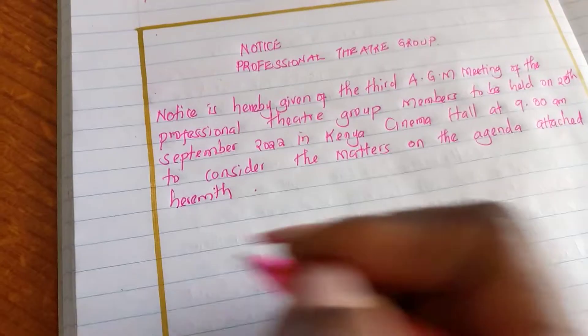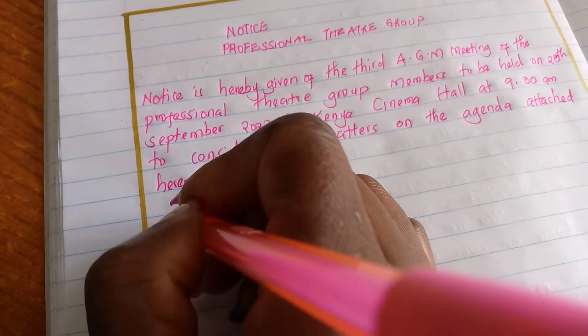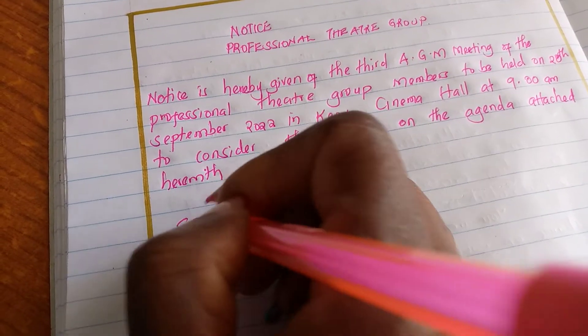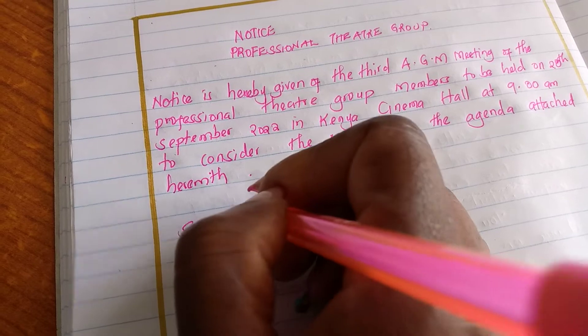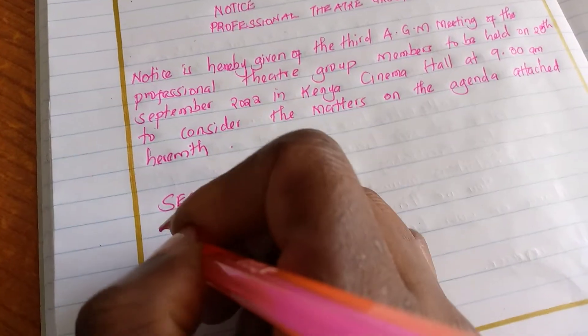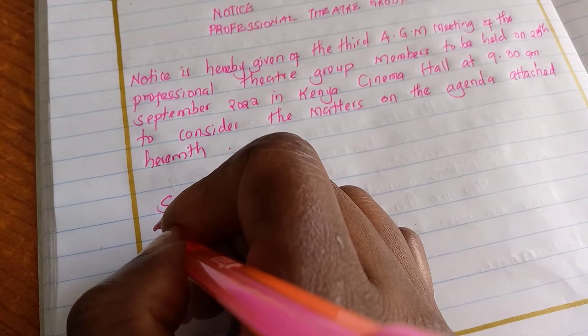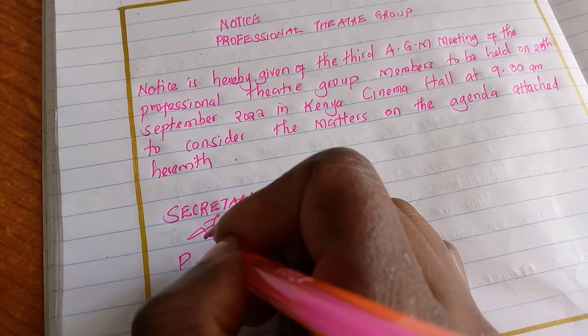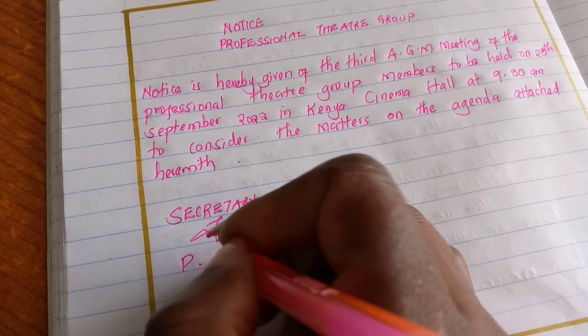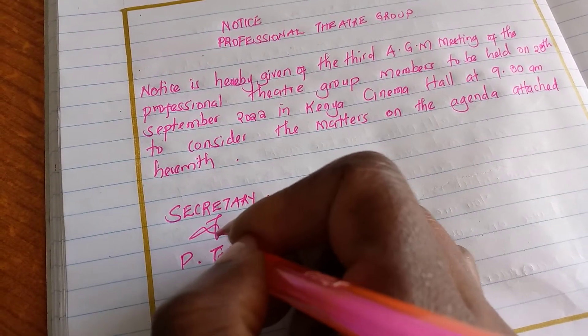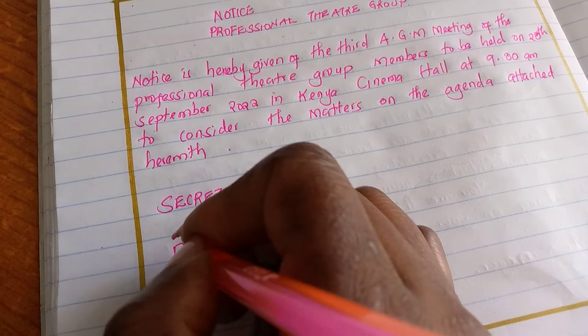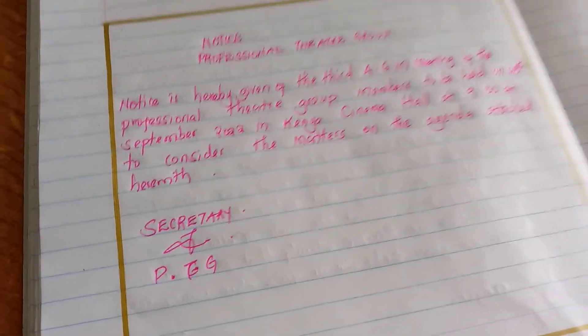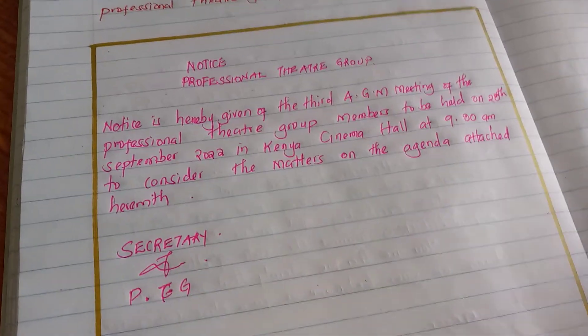Then after that, you sign 'Secretary' and give your signature. It is a professional theatre group. That is our notice. We now go ahead and write the agenda.